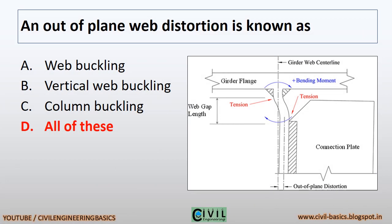An out-of-plane web distortion is known as: web buckling, vertical web buckling, or column buckling — all of these are known as an out-of-plane web distortion.